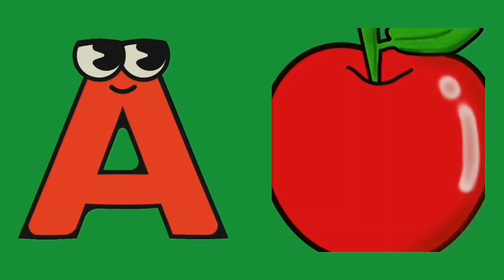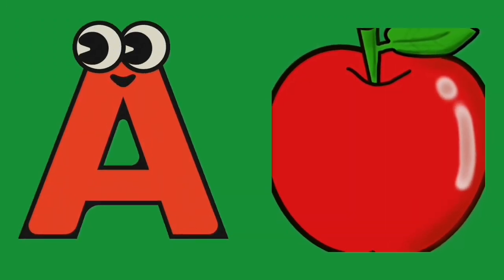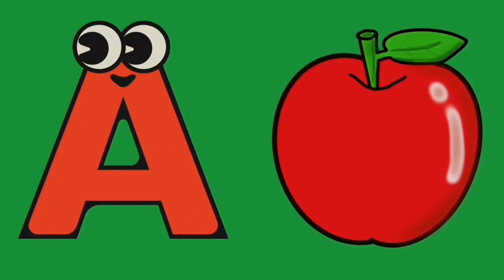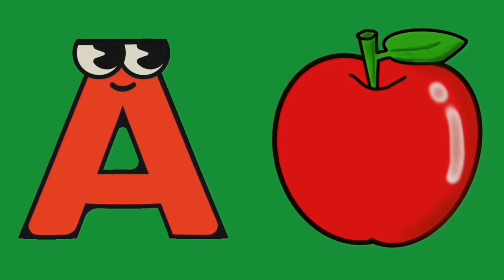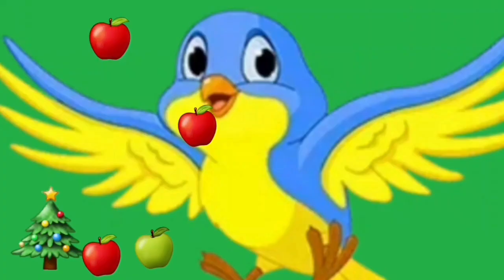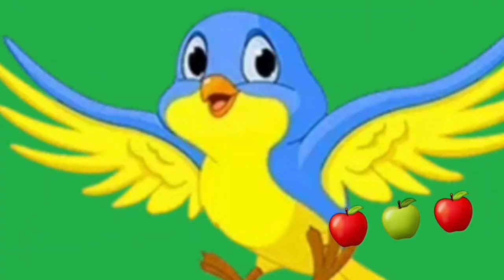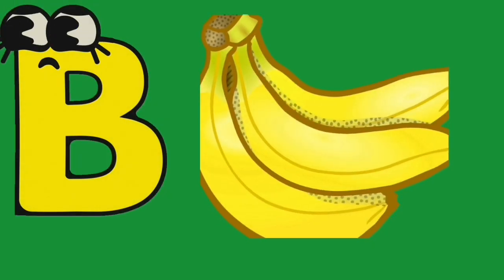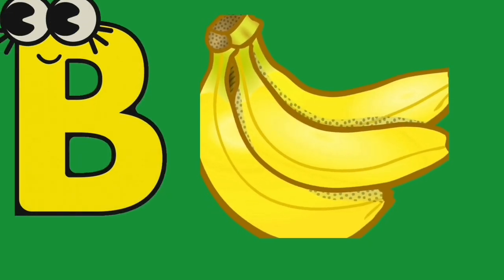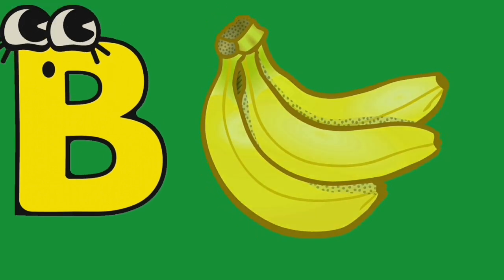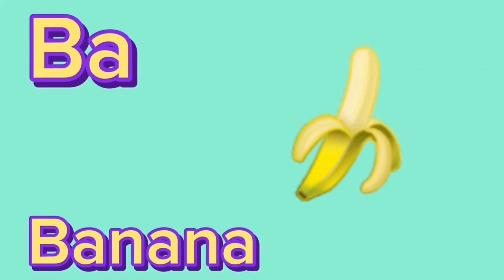Hi kids, today we learn fruit names. A for Apple. Its color is red. It starts with the letter A. A bird is eating an apple. B for Banana. Its color is yellow. It starts with the letter B.